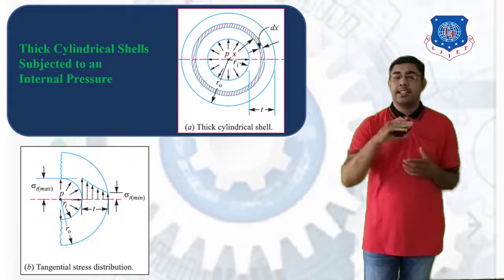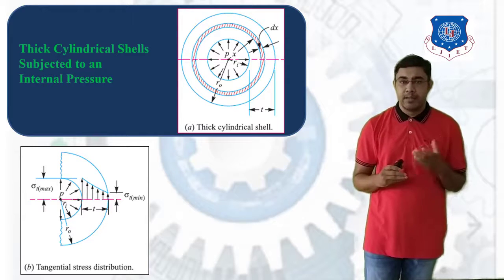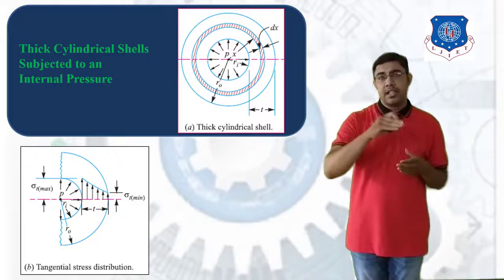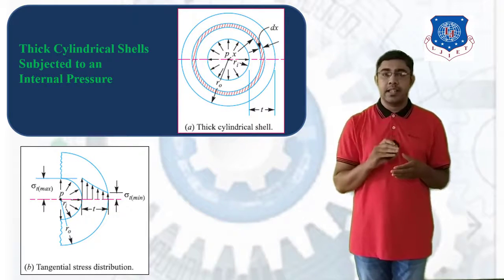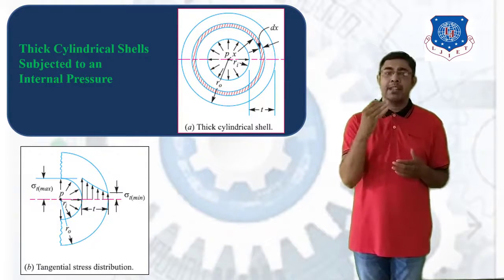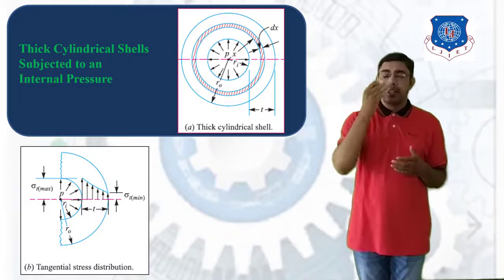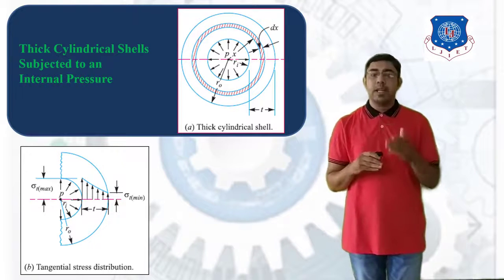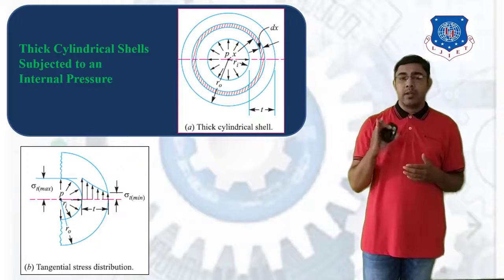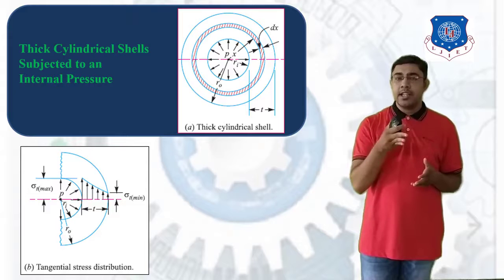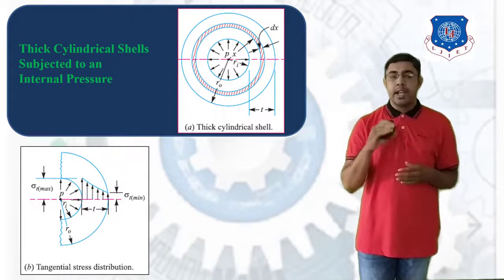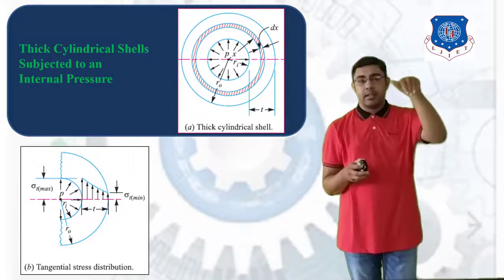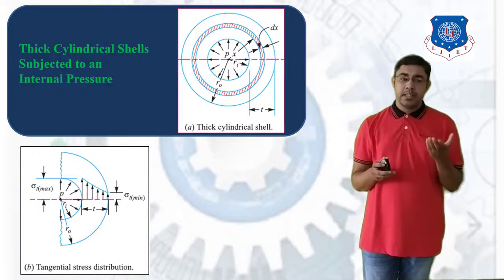Consider the tangential stress distribution when internal pressure P is applied. The tangential stress is maximum at the inner radius of the cylindrical cell and gradually decreases as we go from the inner to the outer surface. It is minimum at the outer radius, giving sigma T max at the inner surface and sigma T minimum at the outer surface.